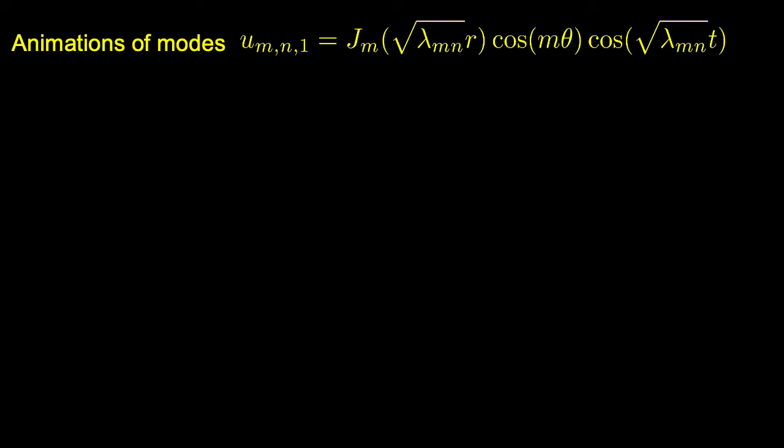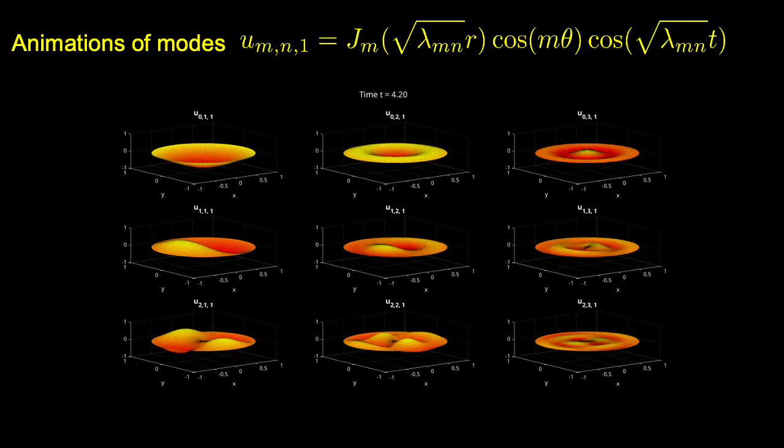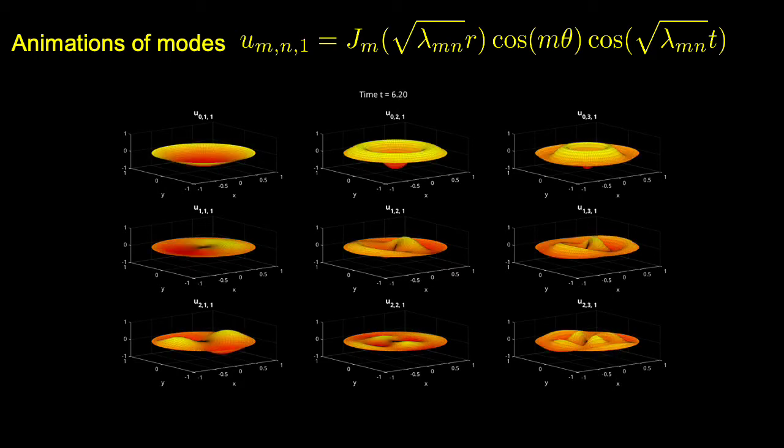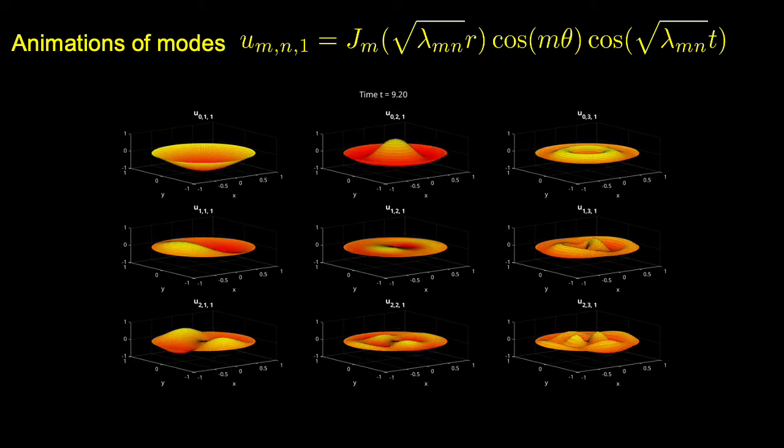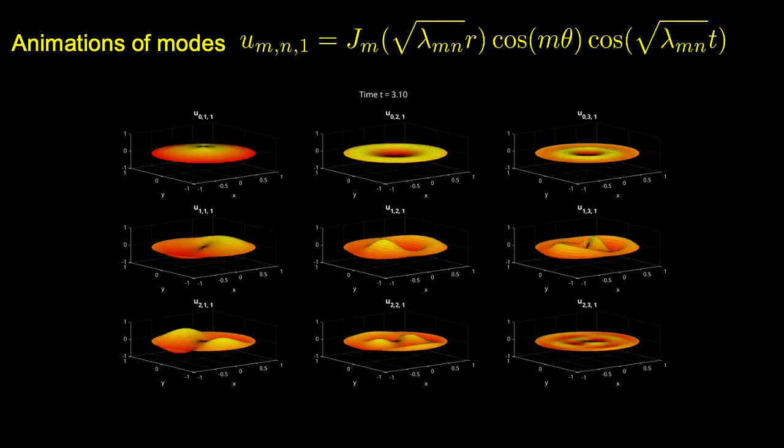We now present a few animations of modes. We picked one type of the four families, the J_m cosine cosine. The other types of modes have similar shapes.